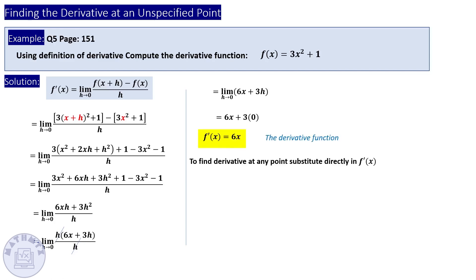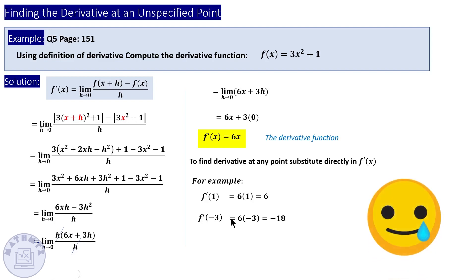Substitute h with zero and the derivative equals 6x. Since you now have the derivative function, you can substitute any point directly into this formula — for example, the derivative at one or the derivative at negative three. This method will be overridden by the power rule, which is an easier approach, unless the question specifically states you must use the limit definition.